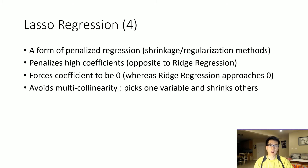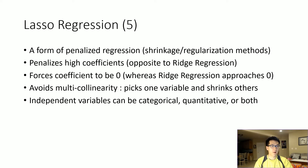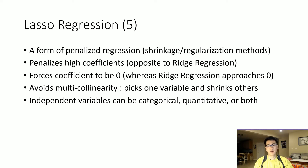Since all the copycats will be out of the model, there won't be any multicollinearity involved with using this particular method. Another nice perk is that you can use categorical variables and quantitative variables to identify whatever dependent variable you may need.